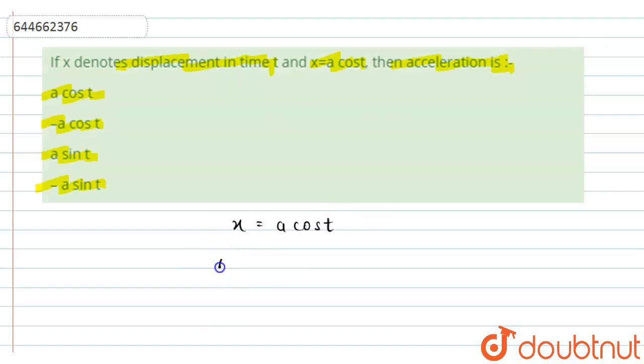The acceleration will be given as the second derivative of displacement with respect to time. We have velocity given as the rate of change of displacement, and acceleration given as the rate of change of velocity.